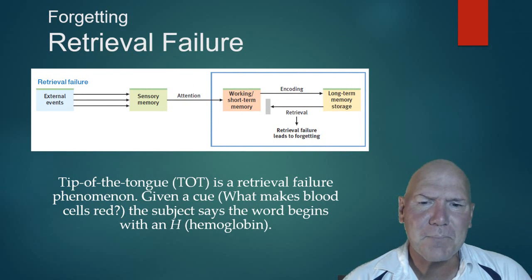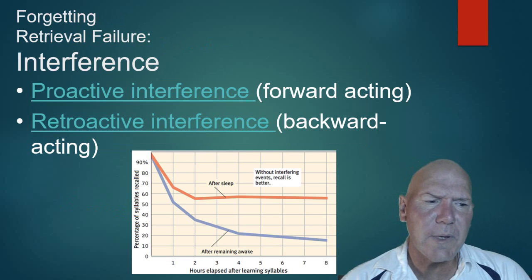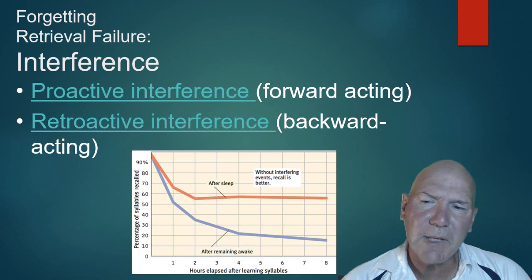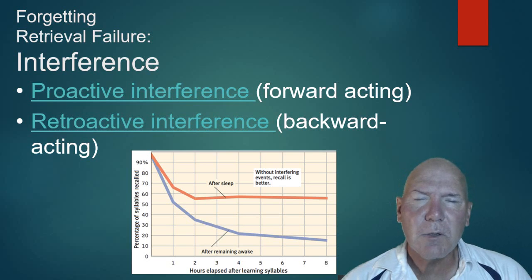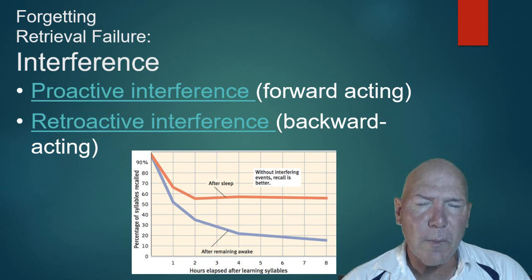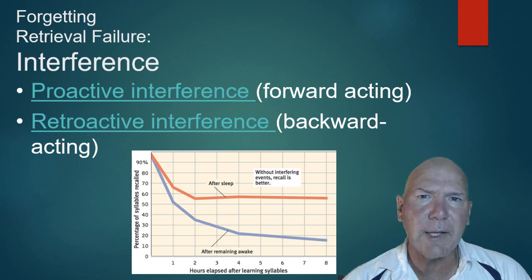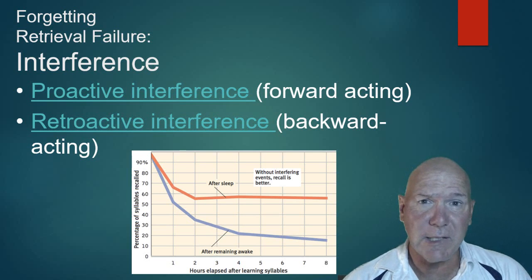By thinking 'it starts with H' or whatever letter, you're trying to prime your memory to retrieve that information. Another reason for forgetting — probably related to primacy and recency effects — is interference. Proactive interference means something you've learned now interferes with memories you make later. For example, you learn your locker combination in 10th grade, and that old combination interferes with learning a new one in 11th or 12th grade.